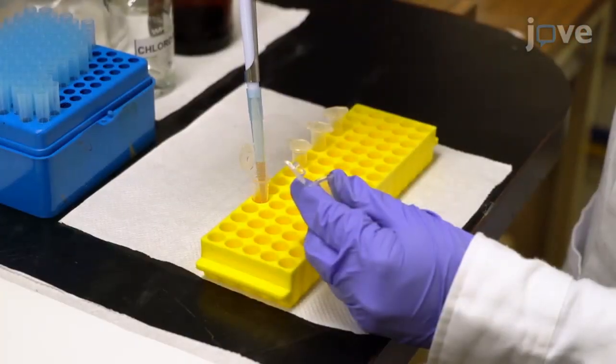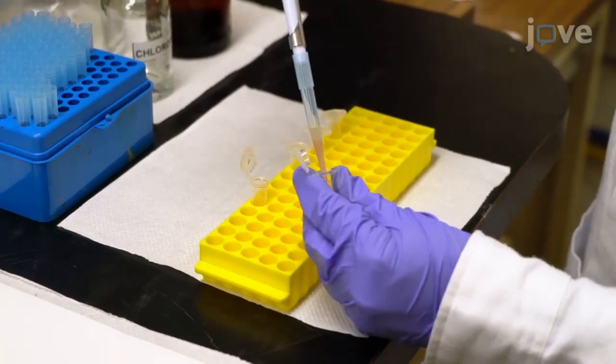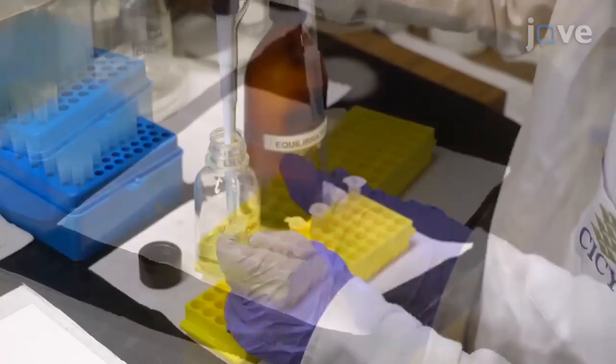Next, transfer 500 microliters of the sample to a sterile microcentrifuge tube. Then, add 300 microliters of chloroform-isoamyl alcohol.